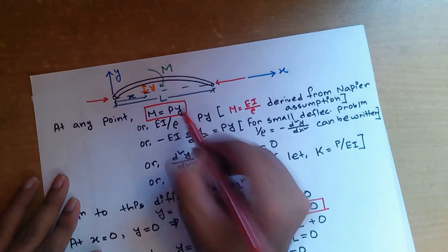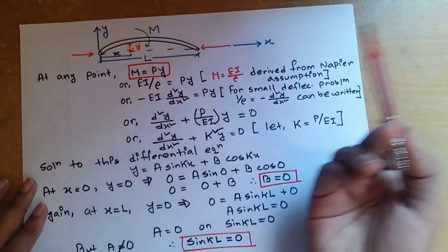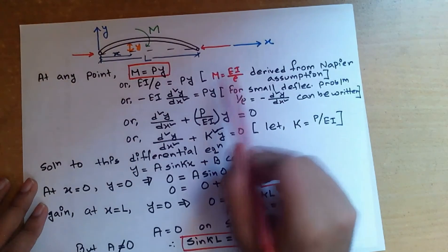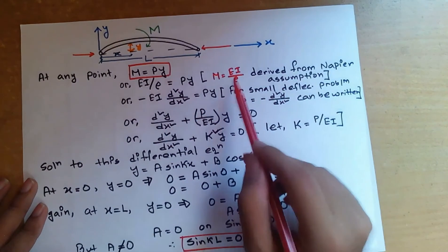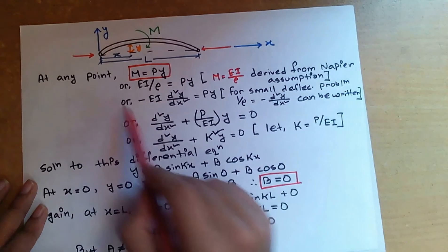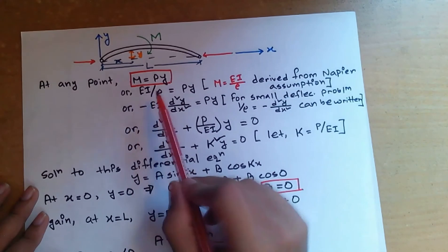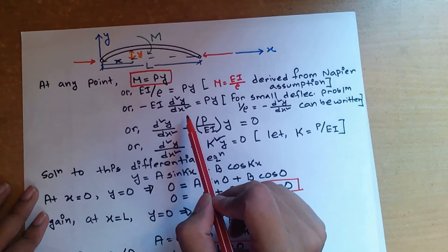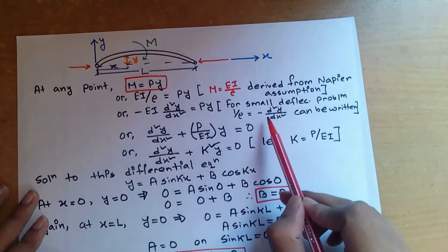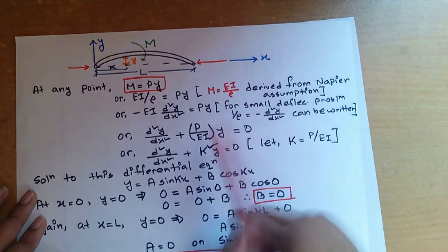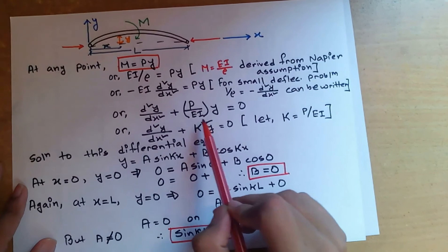If we consider deflection equals y and the moment equals M, then at any point M equals Py. We can also write M equals EI/ρ, derived from Navier's assumption. For a small deflection problem, we can write 1/ρ equals −d²y/dx². Therefore, −EI·d²y/dx² equals Py.